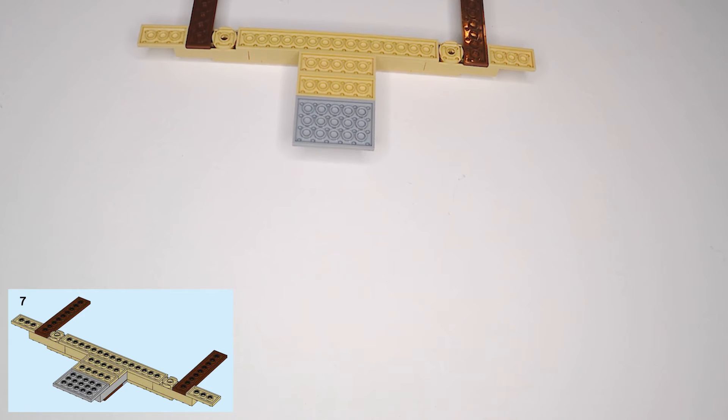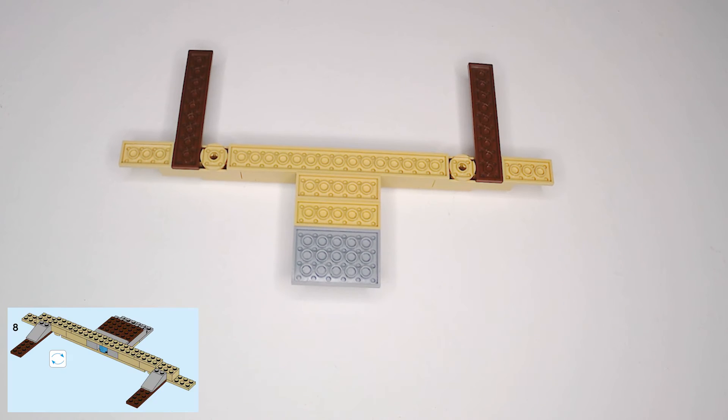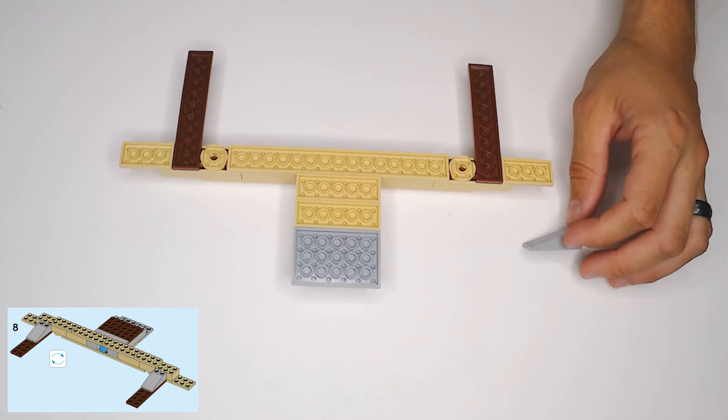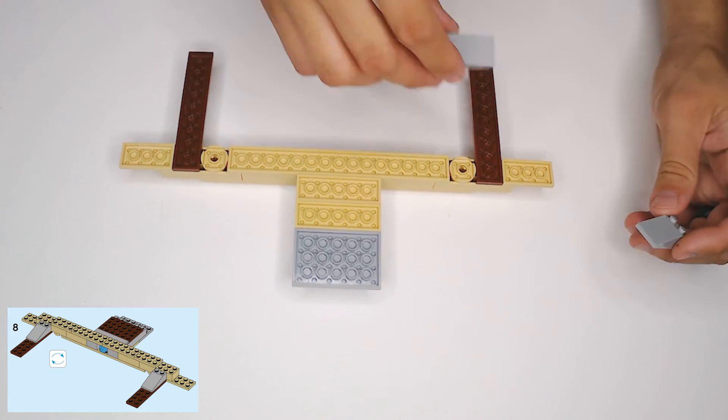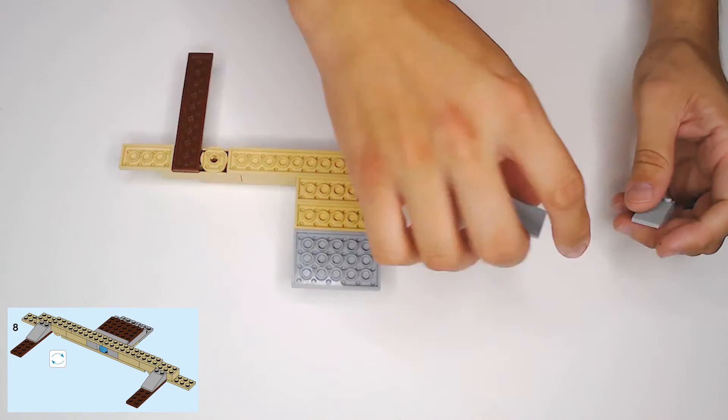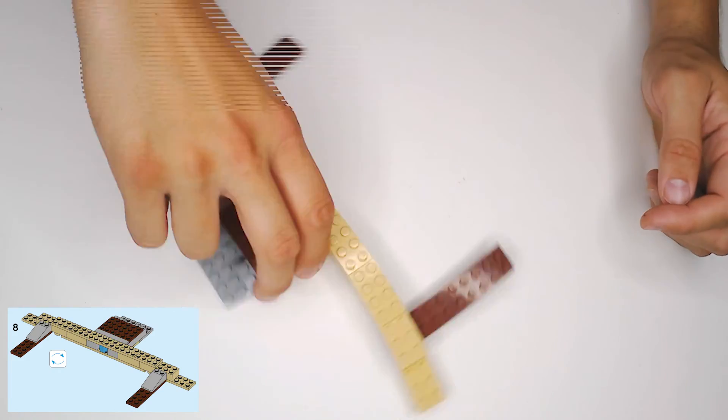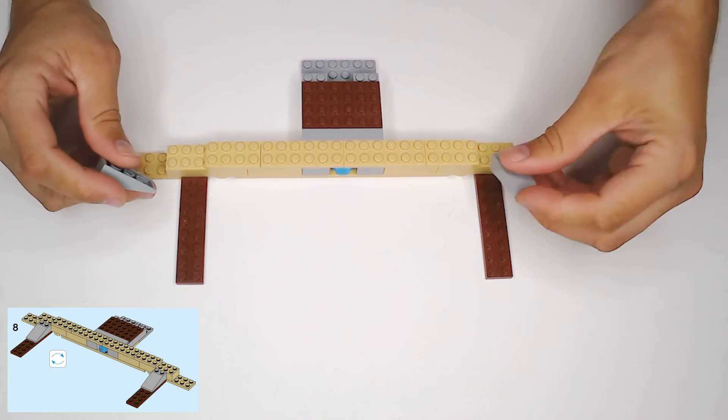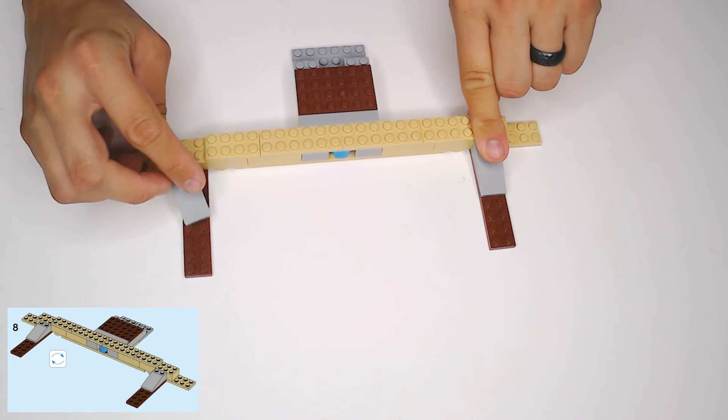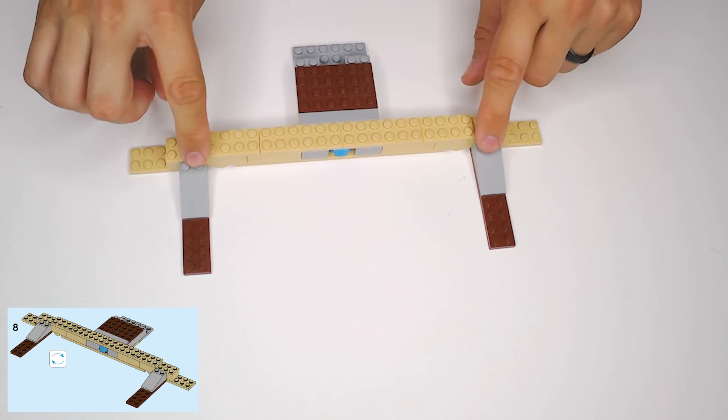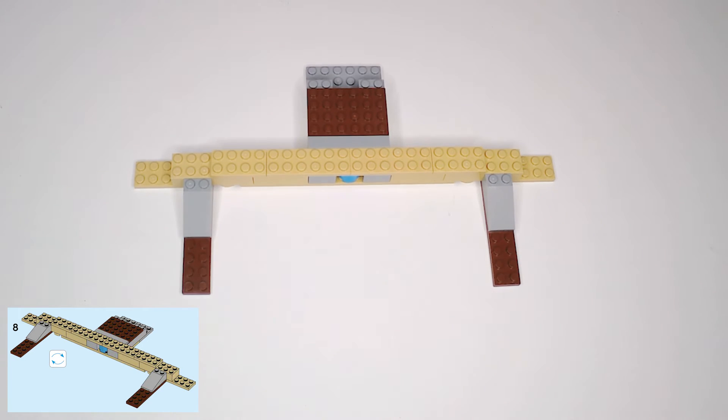Then in step eight, let's grab these slope pieces. These are 2x4 light gray slopes, and we're going to flip this guy back over again, like this. These are going to go on top of these long brown plates. The tall end is going to go up against that tan block, and they're going to slide down toward the ends of those plates.